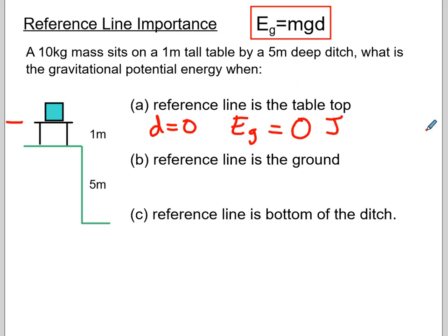If I set my reference line on the ground right here, then that would mean my d or my height above the reference line is one meter, which would mean my Eg would be mass, which is 10, times gravity, times the height above the ground, and I would have 98 joules. Yet it's the exact same condition. So nothing's changed, just my reference line. The problem is still the same.